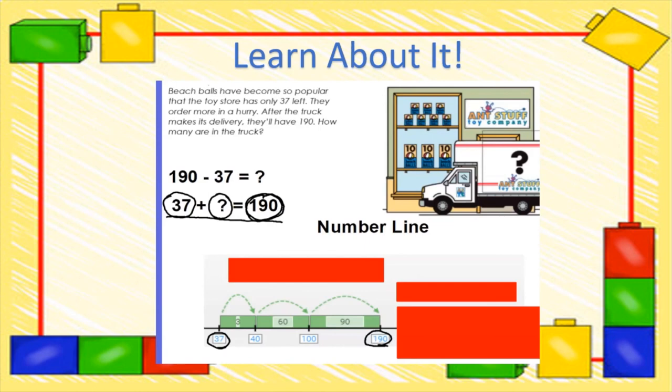So we know that there are 37 beach balls in the store right now. We know a truck is going to come and add some beach balls and give us 190 total. We just don't know how many are in the truck. So we can start here with the number 37 and we can add up until we hit our number 190. So when we're adding, we always want to get to numbers that are easy to use. And like I've said before, we want to use numbers that end in a zero or numbers that end in a five. So in this case, 37 is very close to 40 and 40 ends in a zero. So we're going to go ahead and add till we get to 40, which will give us three.